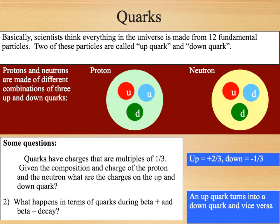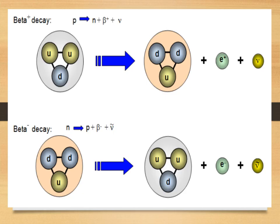Our up quark has a charge of plus two-thirds and our down quark has a charge of minus one-third. During beta plus and beta minus decay it's the up quark turning into a down quark or vice versa. In beta plus decay an up quark turns into a down quark, and in beta minus decay it's a down quark that becomes an up quark. In the last tutorial we looked at beta plus decay being a proton turning into a neutron, releasing a neutrino and a positron, and in beta minus a neutron turning into a proton, releasing an anti-neutrino and our beta minus particle, the electron.